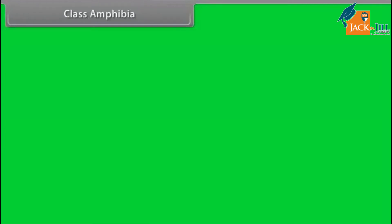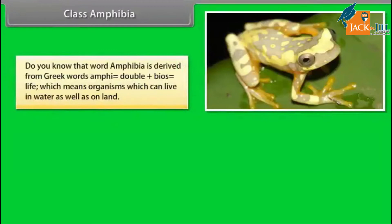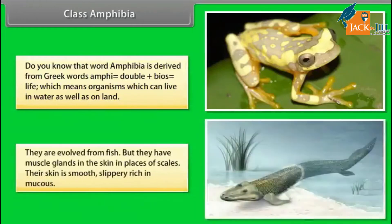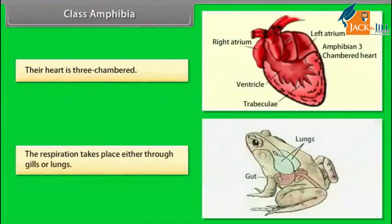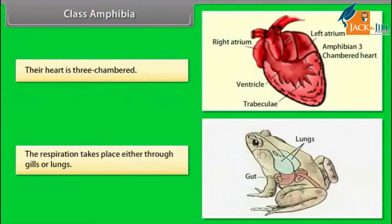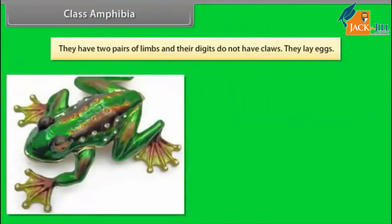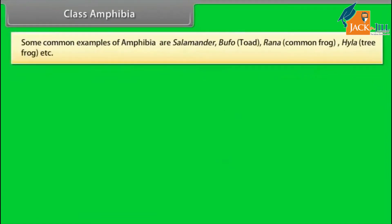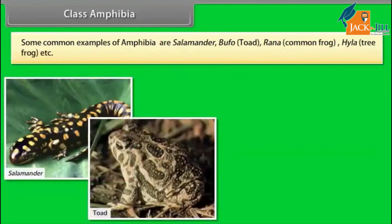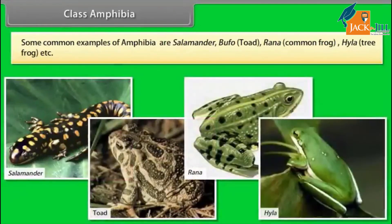Class Amphibia. The word Amphibia is derived from Greek words amphi, which means double, plus bios, which means life — organisms which can live in water as well as on land. They evolved from fish but have mucus glands in the skin in place of scales. Their skin is smooth, slippery, and rich in mucus. Their heart is three-chambered. Respiration takes place either through gills or lungs. They have two pairs of limbs and their digits do not have claws. They lay eggs. Common examples are Salamander, Bufo (Toad), Rana (Common Frog), and Hyla (Tree Frog).